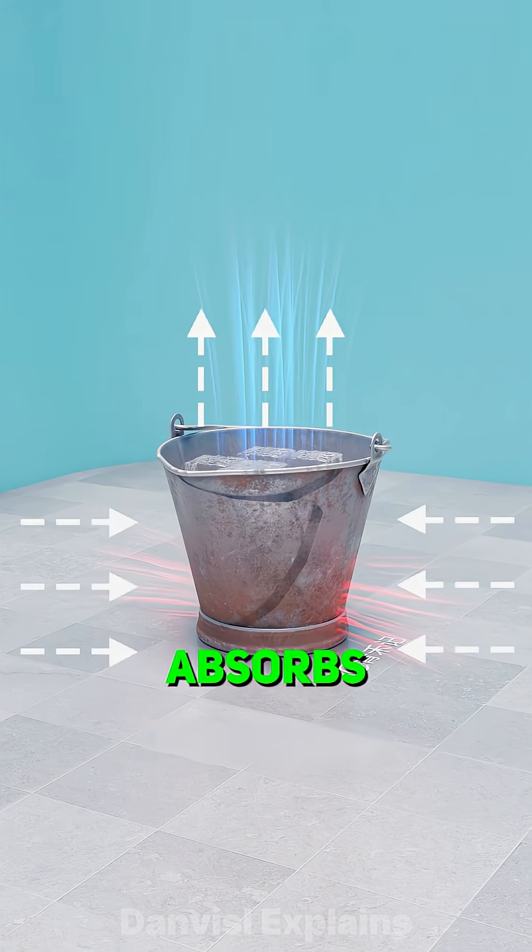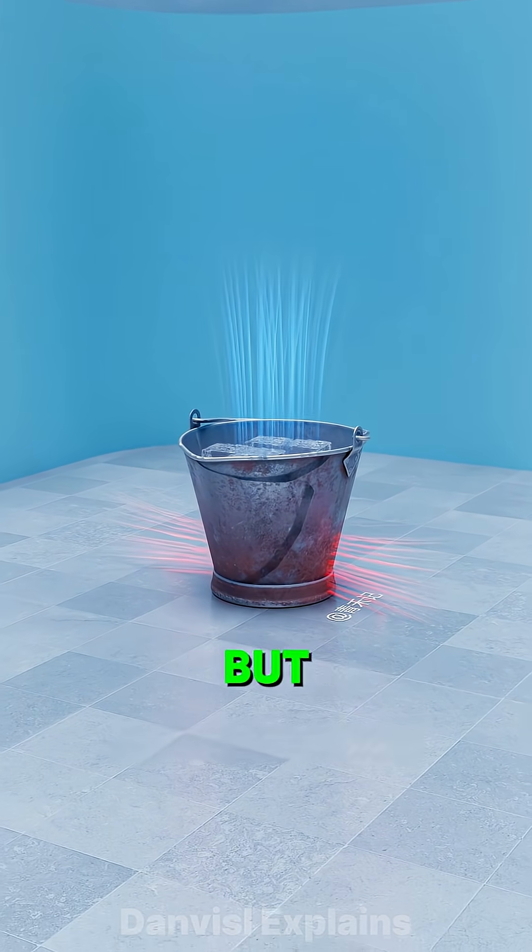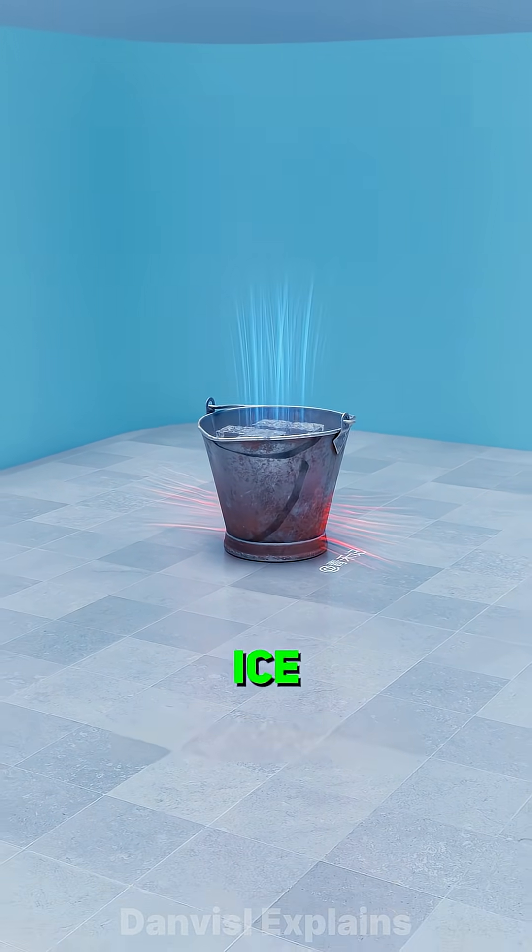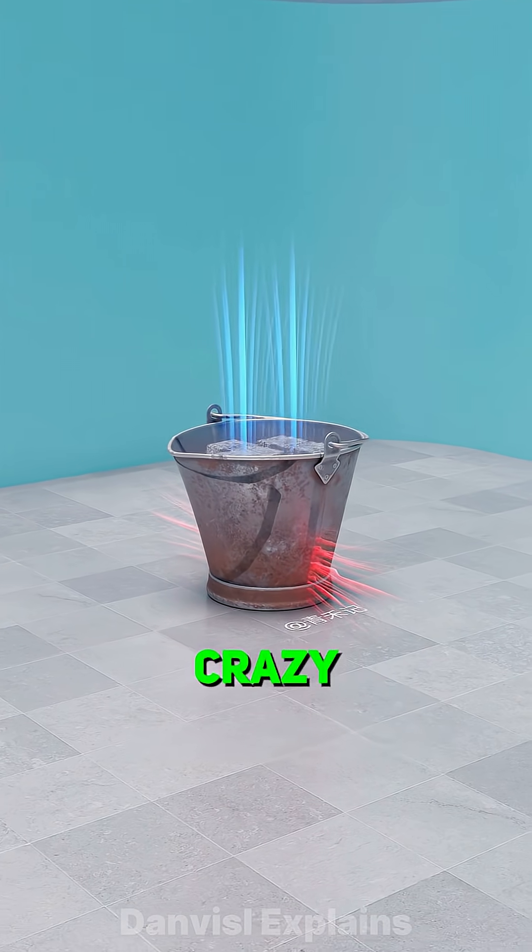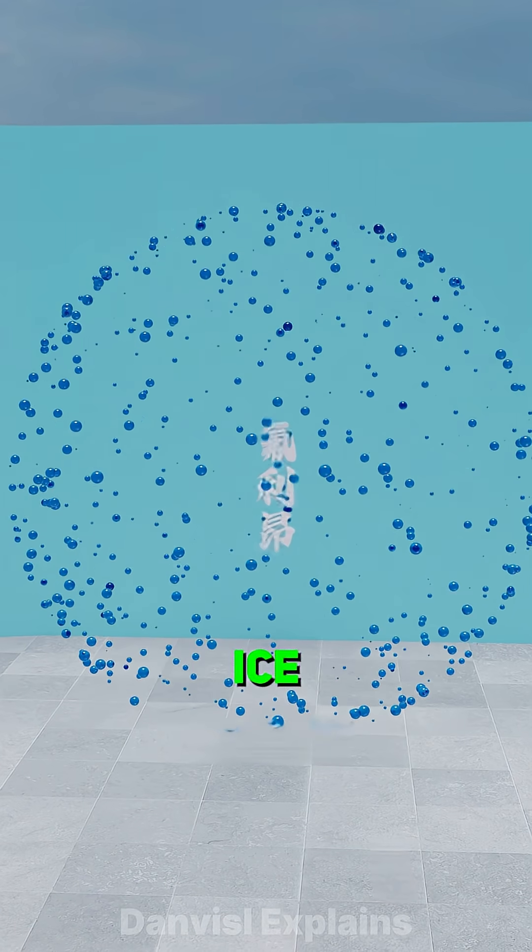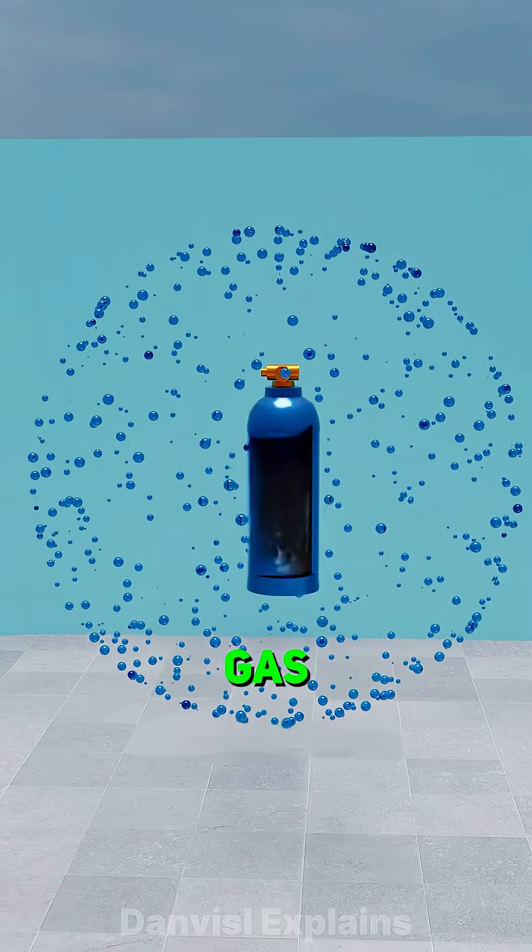When ice melts, it absorbs heat, lowering the room's temperature. But that's too slow, and replacing ice constantly would drive anyone crazy. So engineers found a way to make artificial ice that never melts. Refrigerant gas.